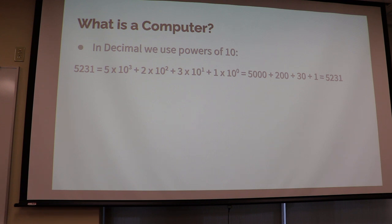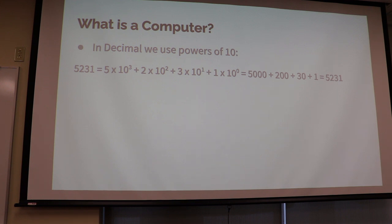If you go back to algebra, basic arithmetic — ten to the third is a thousand, ten times ten times ten. Ten squared is a hundred. Ten to the first is ten. Anything to the zero power is just one. So what this is actually doing is saying five times a thousand, two times a hundred, three times ten, one times one — and that's how you get 5,231.